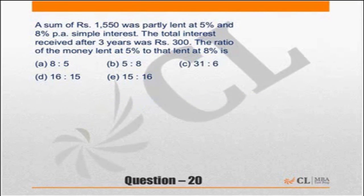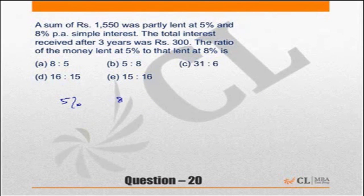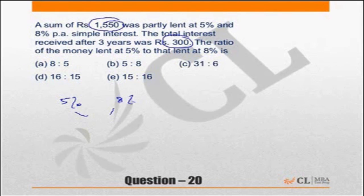What we are doing is mixing a 5% rate of interest with an 8% rate of interest and getting an average interest, which is ₹300 on ₹1550 over 3 years. So we find the effective rate of interest, substitute here, and do the allegation.